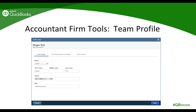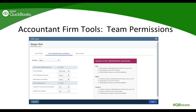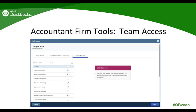On the firm administration and books tab for the new team user, you determine what level of access to grant in relation to the QBOA firm. Full access lets the user edit the QBOA firm information, modify other team users, update the firm's wholesale subscription billing, and access the firm's books. Basic access gives view-only access to QBOA firm information with no access to managing team users, subscription billing, or the firm's books. You can also set a custom access with a different mix of these permissions.